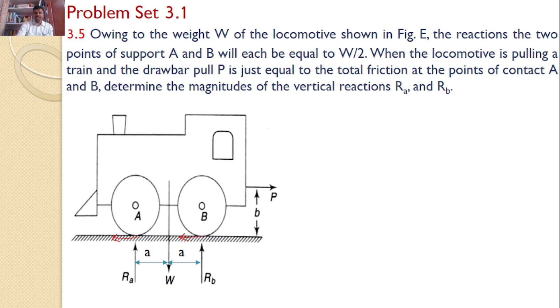Now, to satisfy the equilibrium, let us consider the equilibrium equation sigma Fy equals 0. Now, there are only two forces acting along Y axis, hence Ra plus Rb is equal to W.